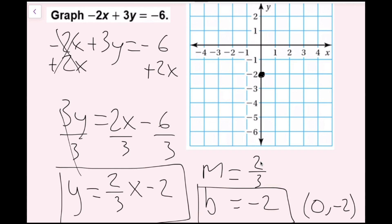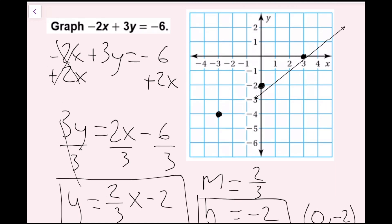I always recommend fitting as many points on the graph as possible. So I've gone up 2, right 3, but I can also go down 2, left 3 to fit the ordered pair negative 3, negative 4. That's all I can fit on this graph. Now I'm going to draw a line through all the points. I've successfully drawn my line through these points, and now we're done with this one.